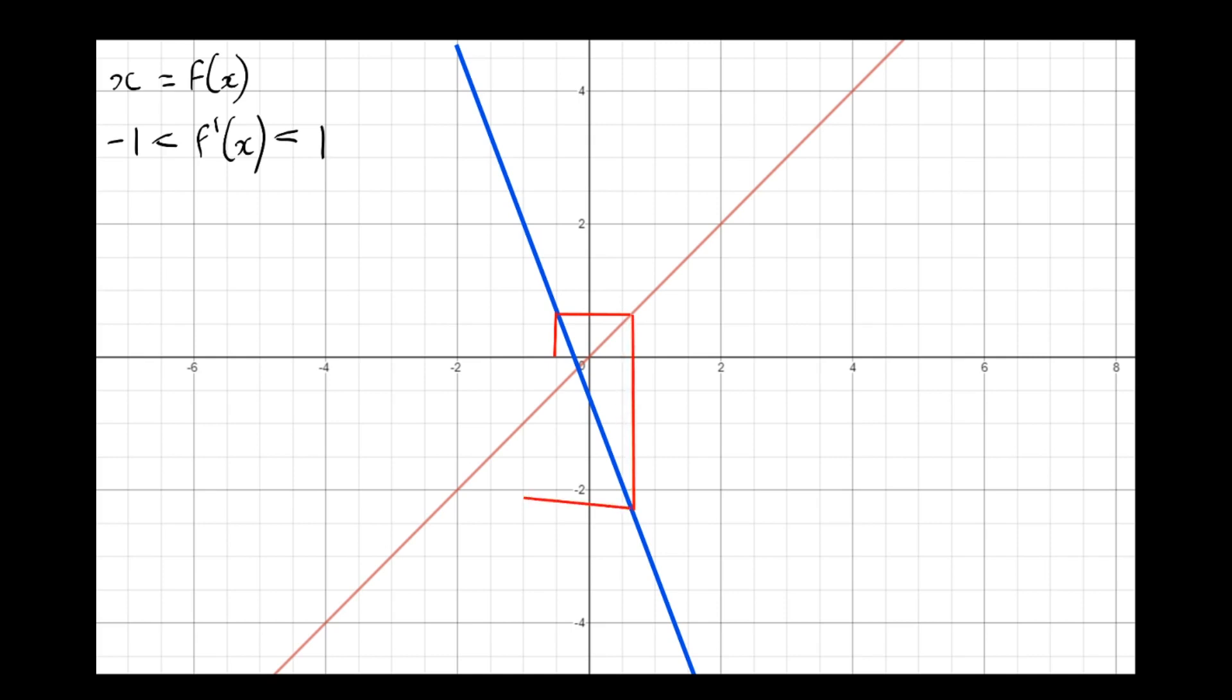to f(x), to y equals x, to f(x). And we can see it's cobwebbing outwards now. So it's not going to converge again.